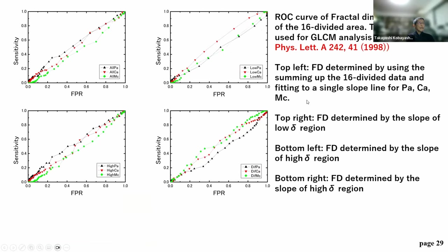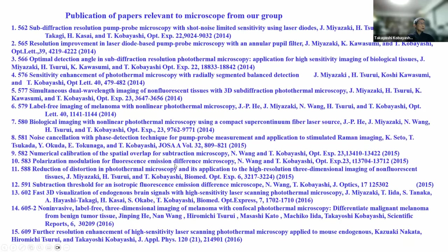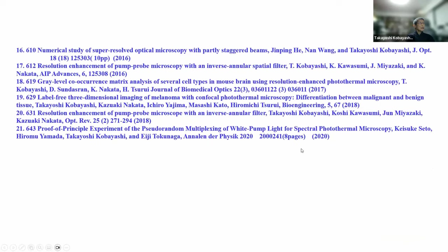To summarize and conclude: for images of mouse melanoma, applying GLCM analysis for three different cells with nine parameters, we obtained that shade is the best parameter. Three sets of parameters can be used for good separation and identification of carcinoma or relevant cells. The results have been published in the listed papers. I would like to conclude, and I am very happy to answer any questions.